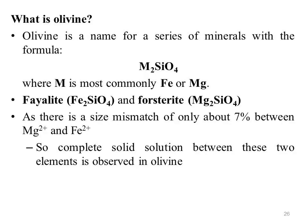What is olivine? Olivine is a name for a series of minerals with the formula M2SiO4, where M is most commonly iron or magnesium. Fayalite (Fe2SiO4) and forsterite (Mg2SiO4) form a substitutional solid solution where the iron and magnesium atoms can be substituted for each other without significantly changing the crystal structure, as there is a size mismatch of only about 7% between magnesium ions and iron ions. So complete solid solution between these two elements is observed in olivine.